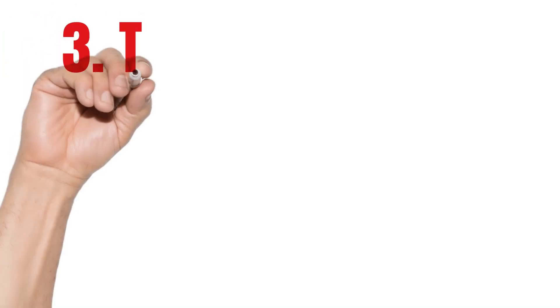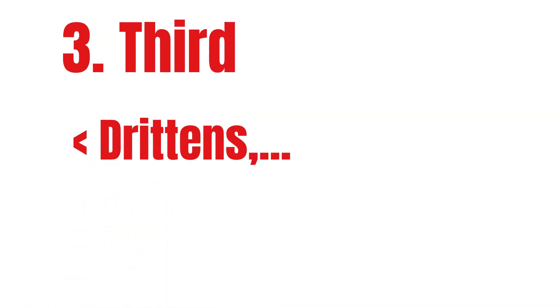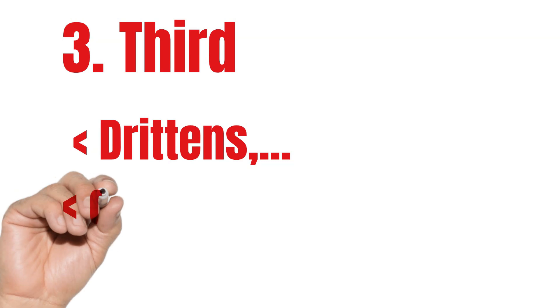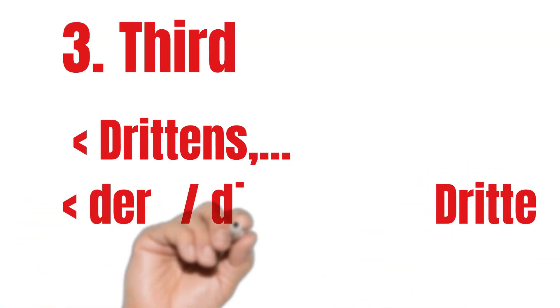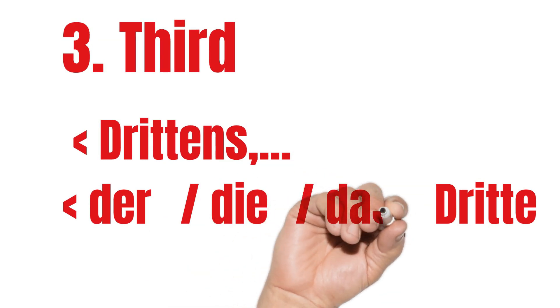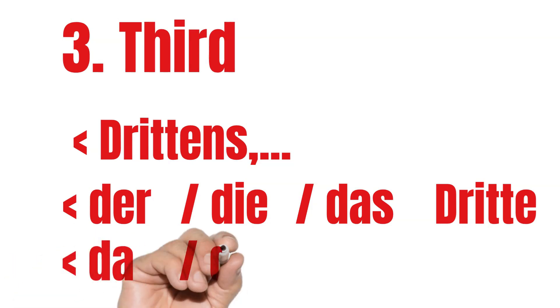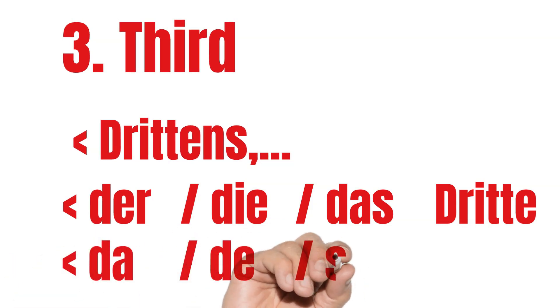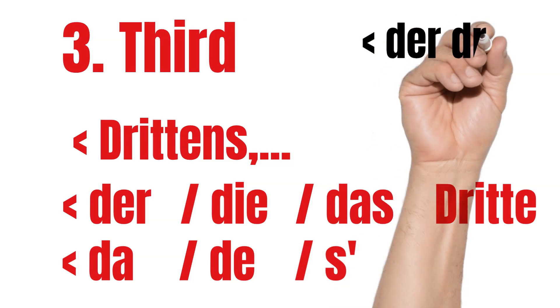Third. For numbered lists, third means Drittens. With articles: der Dritte, die Dritte, das Dritte. In Austrian German, you often come across der Dritte, die Dritte, das Dritte. With months, for example, the 3rd of March is der Dritte März.